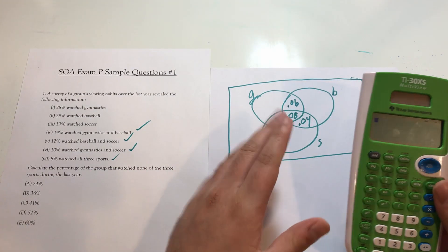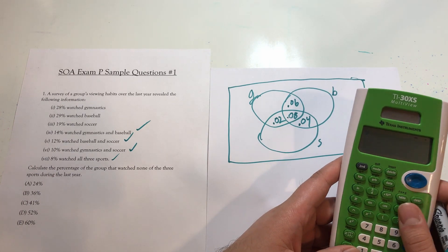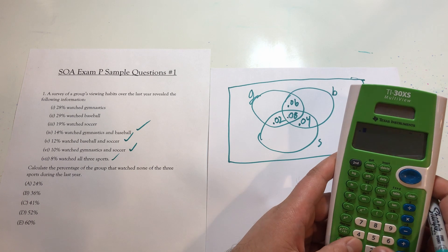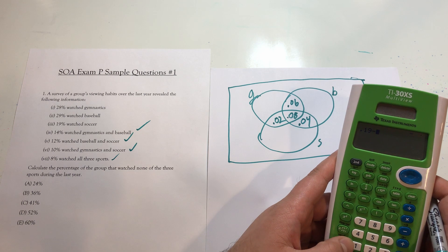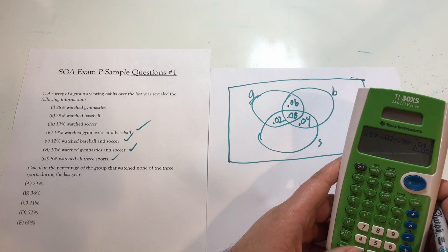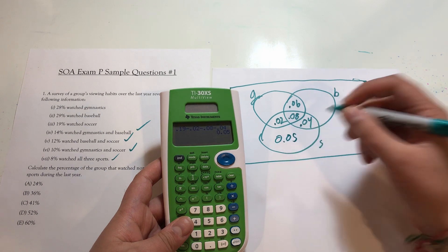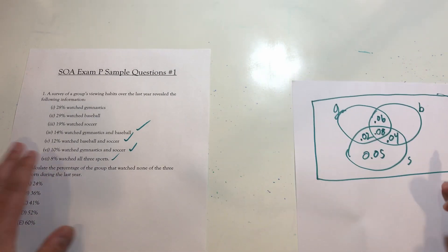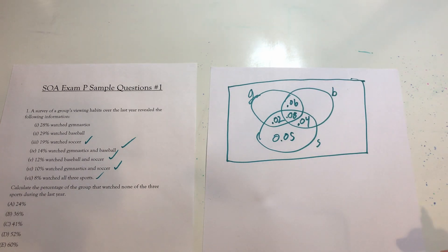So 19% watched soccer. This whole circle should add up to 0.19. I'll just grab, just to make sure I don't get the calculations wrong in my head, my TI-30X, which definitely is my calculator recommendation for exam P. Okay, 0.19 minus 0.02 minus 0.08 minus 0.04. That gets me 0.05. So 0.05 or 5% of all viewers watch soccer and only soccer. I'm kind of over explaining it, but I really want it to be clear what each section of this Venn diagram is.